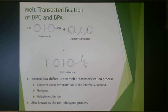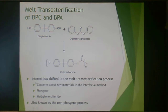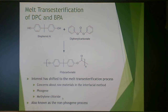In melt transesterification, bisphenol A and diphenyl carbonate are combined to produce the same polycarbonate repeat unit. There is significant interest in this method because it moves away from phosgene and methylene chloride, which is expensive and detrimental to the environment and must be recycled. So melt transesterification is gaining ground.